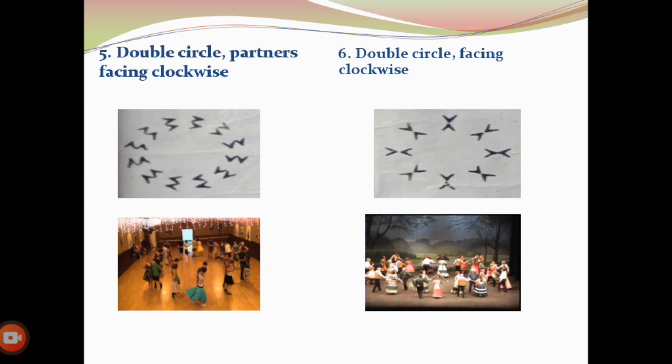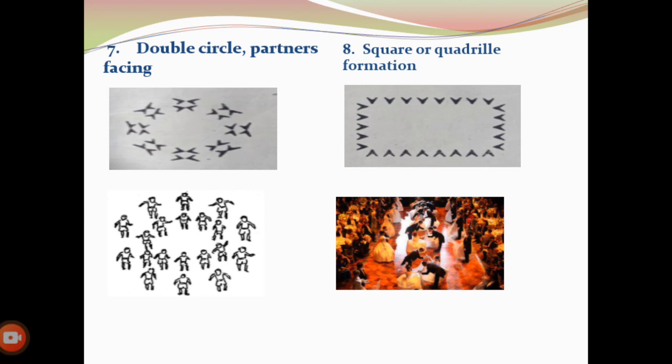Single Circle Facing Center: all dancers form a circle and face each other. Double Circle Partners Facing Clockwise: couples stand side by side, usually with the girl on the partner's right, facing to the right. Double Circle Facing Clockwise: partners arranged in a double circle with both dancers facing in or out. Double Circle Partners Facing: usually the boy stands with his back to the center and the girl faces him. Square or Quadrille Formation: four couples form a square, one couple on each side facing in, with their backs parallel to the walls. The girl should be on the right of her partner.